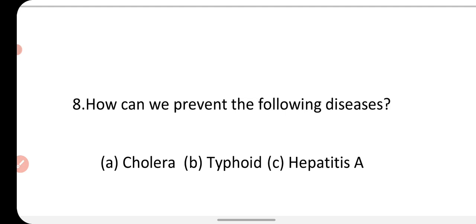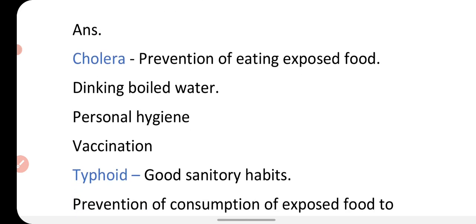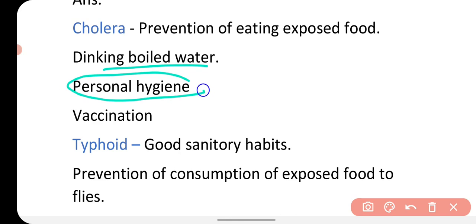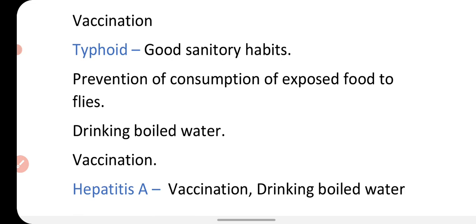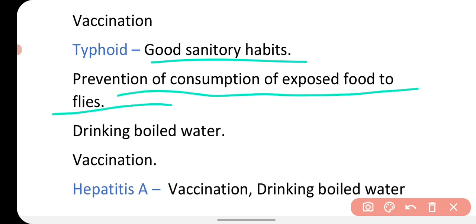The next question asks how we can prevent cholera, typhoid, and hepatitis A. To prevent cholera, you should avoid eating exposed food, drink boiled water, maintain personal hygiene, and get vaccination. To prevent typhoid, you should follow good sanitary habits, maintain hygiene, get vaccinated, and avoid eating exposed food — especially food that flies have been on, since flies are vectors of typhoid bacteria.